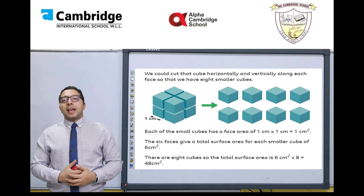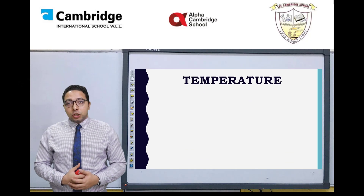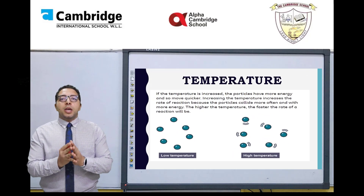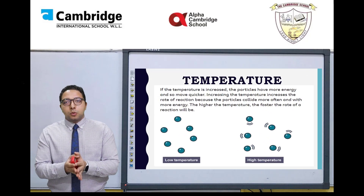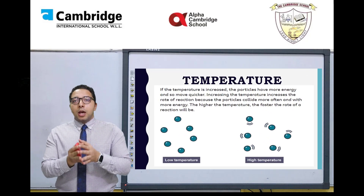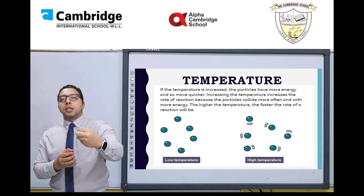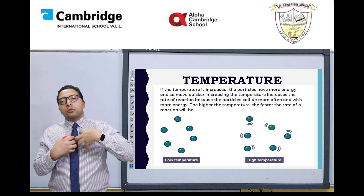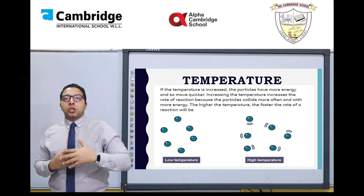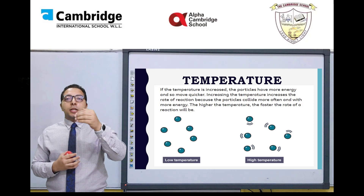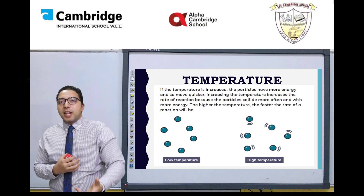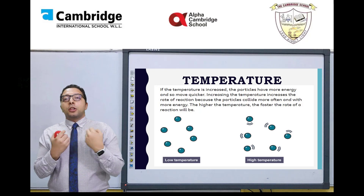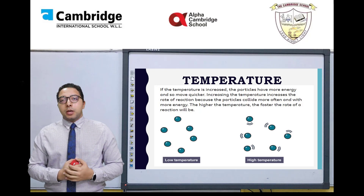The second factor affecting the rate of reaction is temperature. When we heat up the reactants, we give more thermal energy to the particles. The particles gain higher kinetic energy, move very fast, and collide harder. The harder the collision, the faster the reaction will be.